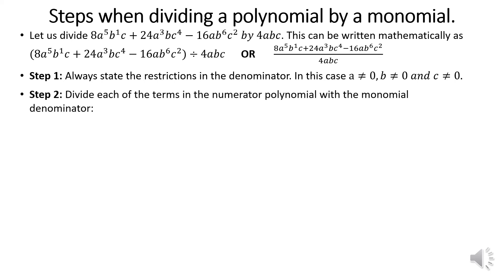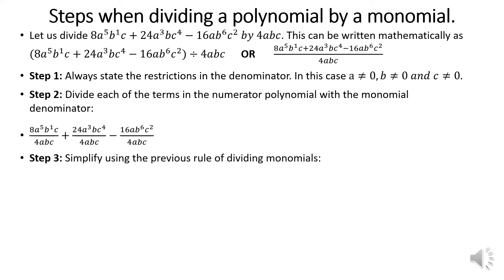Step 2: divide each of the terms in the numerator — that is the polynomial — by the monomial denominator. Each term in the numerator is divided by the monomial. Step 3: simplify using the previous rule of dividing monomials.